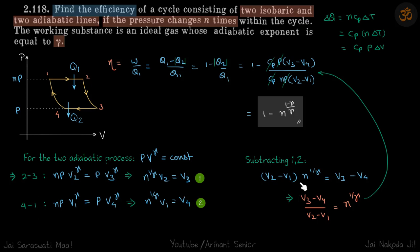Now we can subtract these two to get this ratio. When we subtract these two equations, we get V2 minus V1 into n to the power 1 by gamma is equal to V3 minus V4, or we get this ratio as n to the power 1 by gamma.